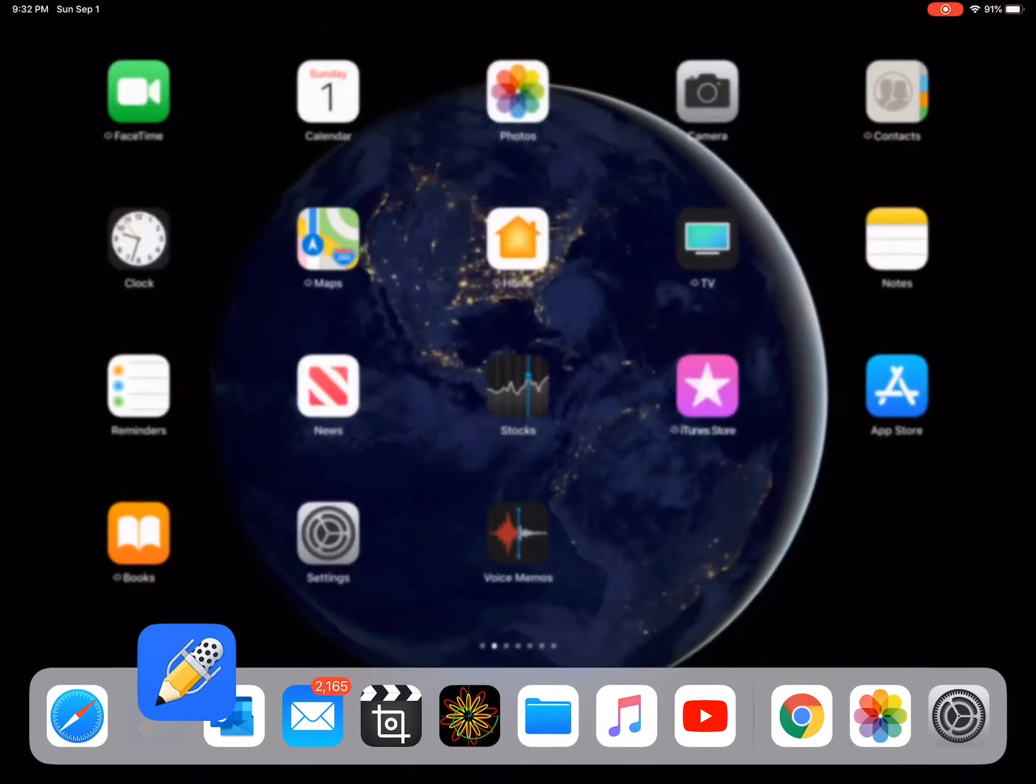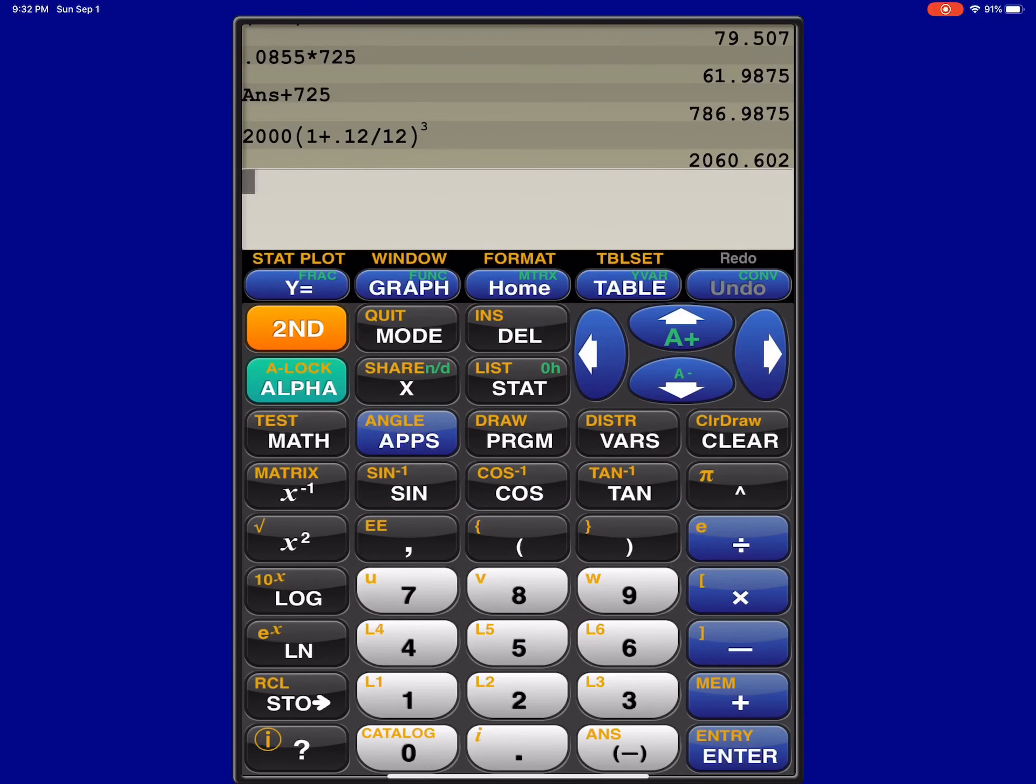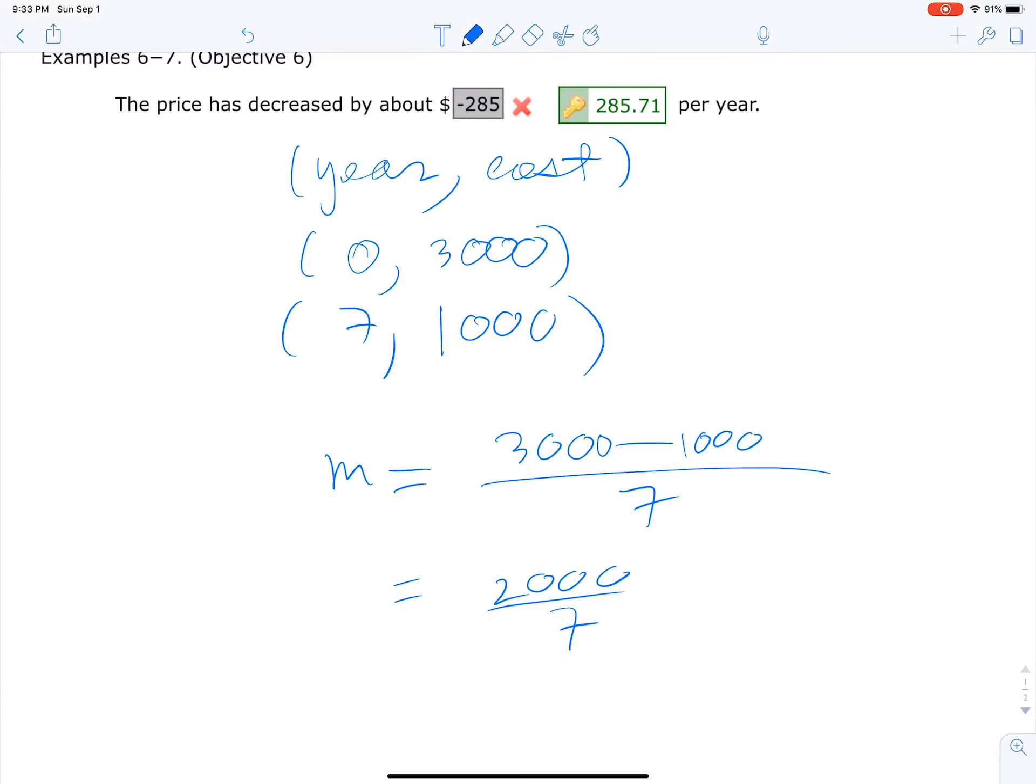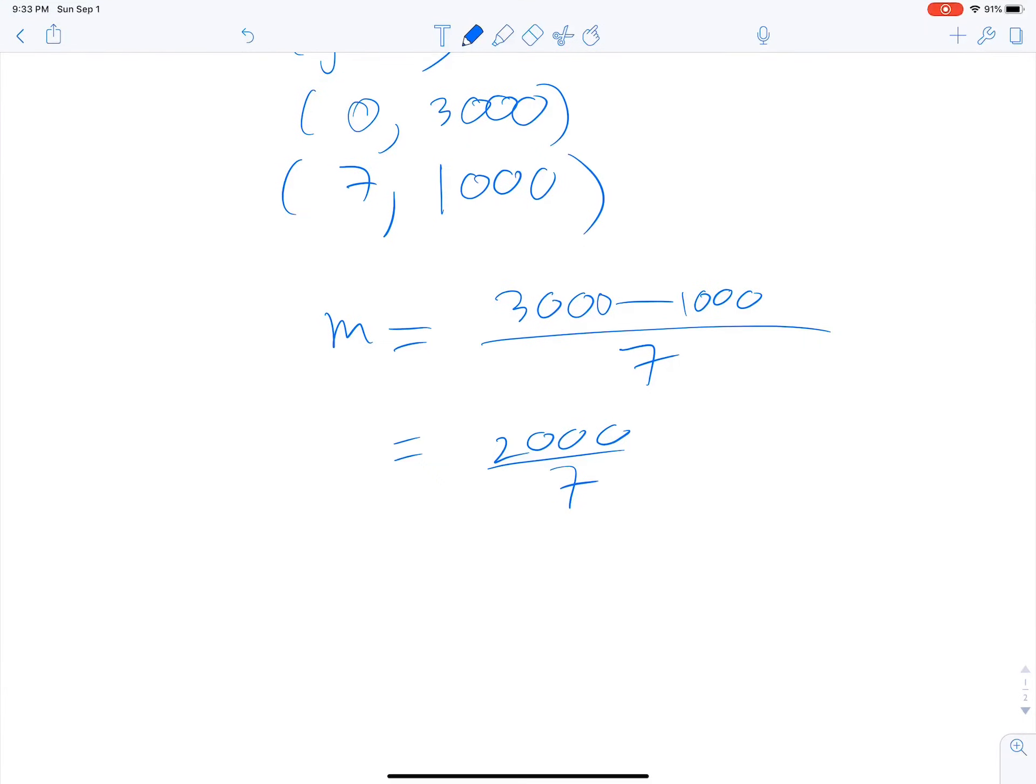Let's see, got a calculator somewhere. 285.71. Well, I guess that's the answer, 285.71. So that's how you do it, that's how you find the slope.